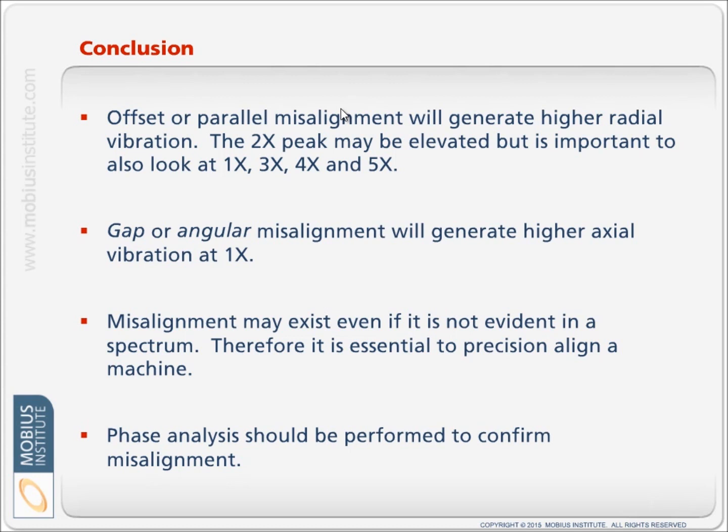Gap or angular misalignment will generate higher axial vibration at the running speed, 1X. Misalignment may exist even if it is not evident in the spectrum. So just because you're not seeing a lot of the symptoms of misalignment in your spectrum, that does not mean that the machines are precision aligned and therefore that the bearings will fail more quickly than otherwise. And we should use phase to confirm that misalignment exists.